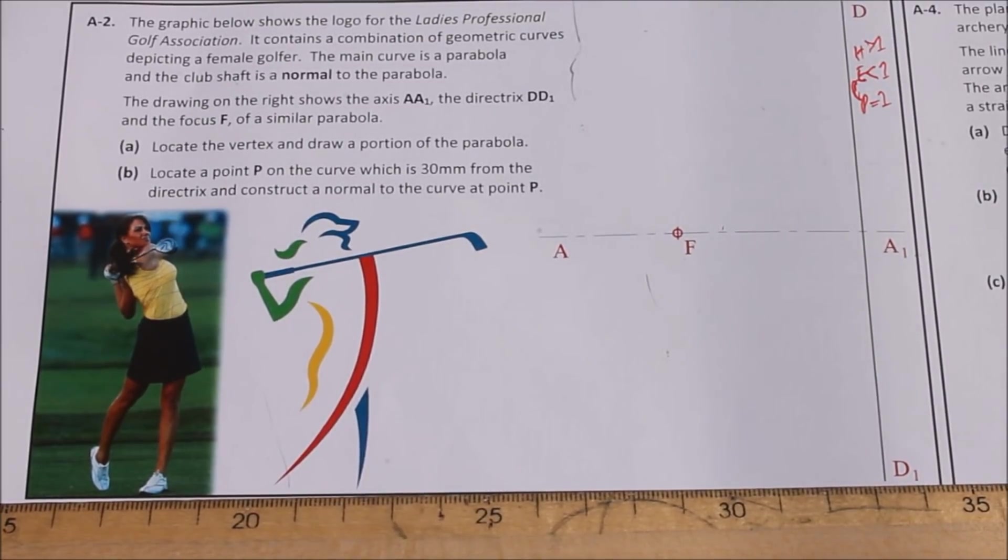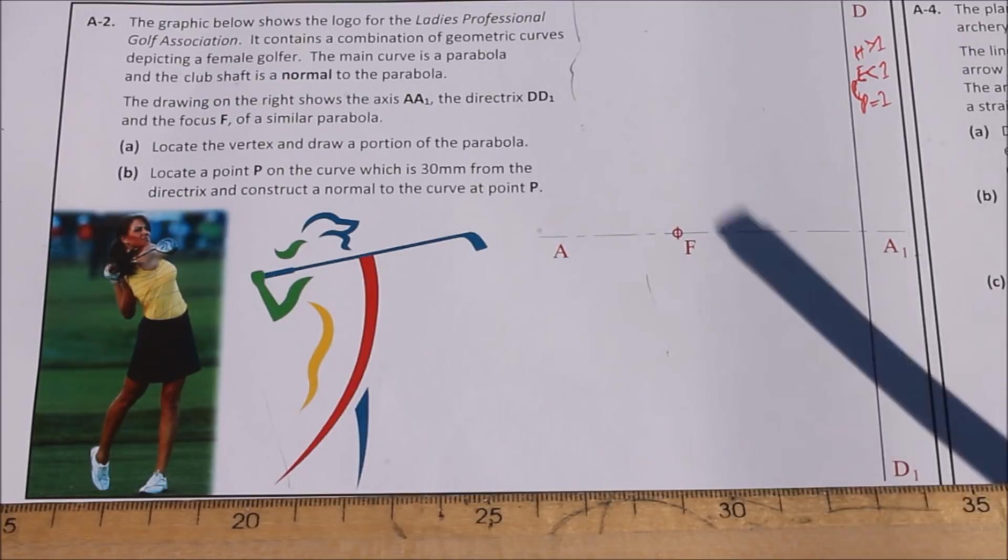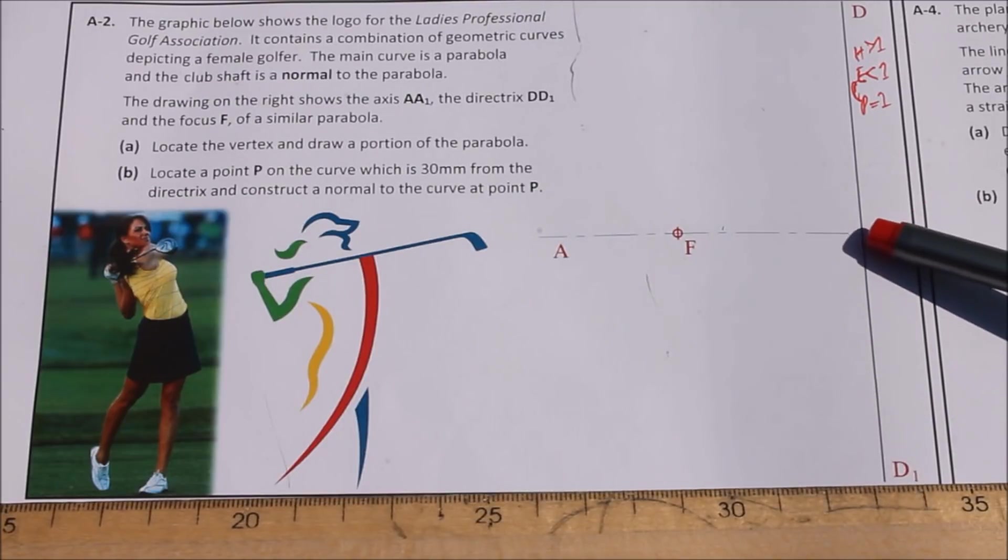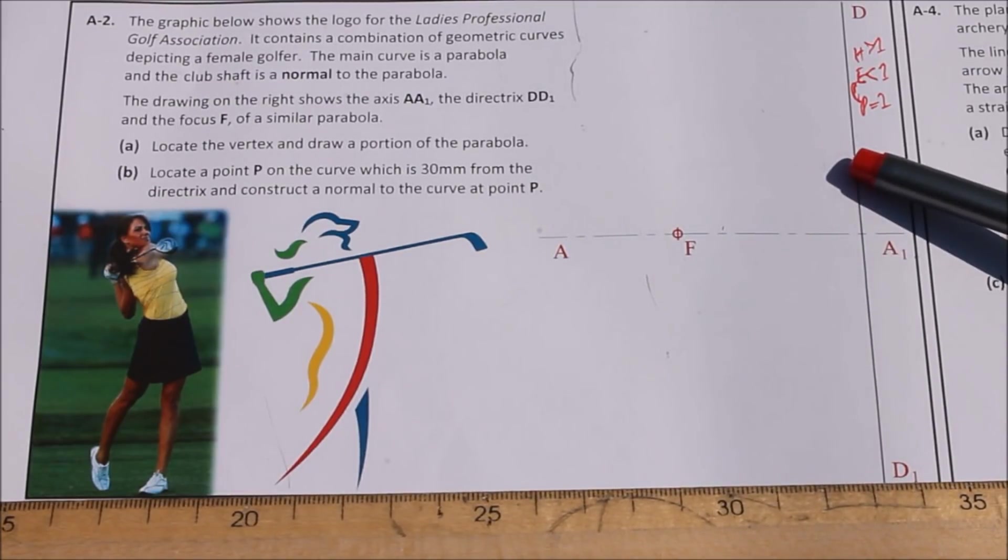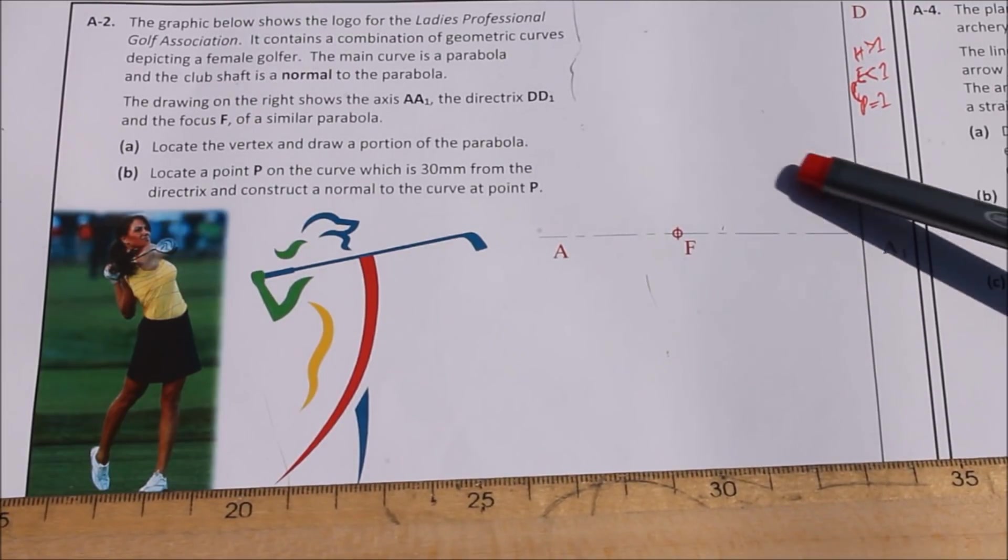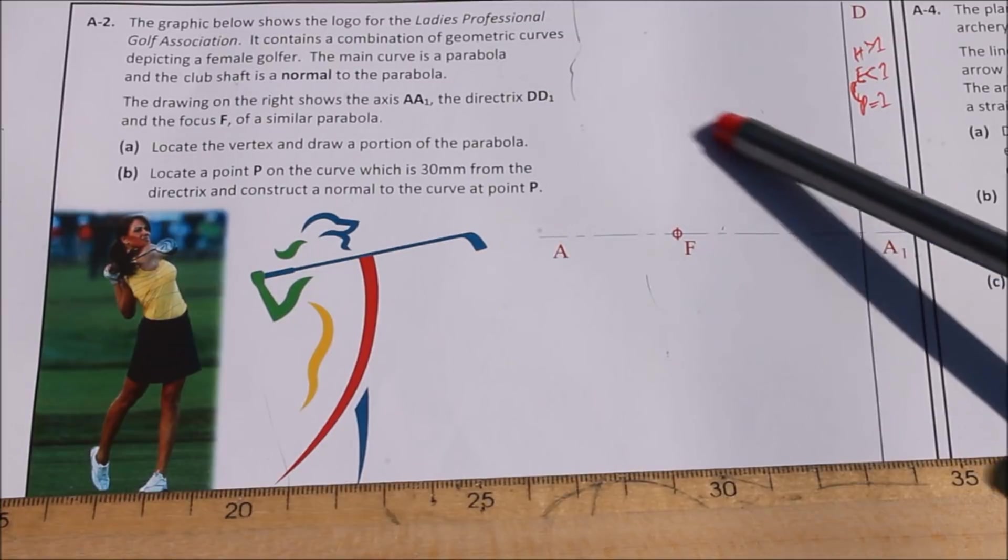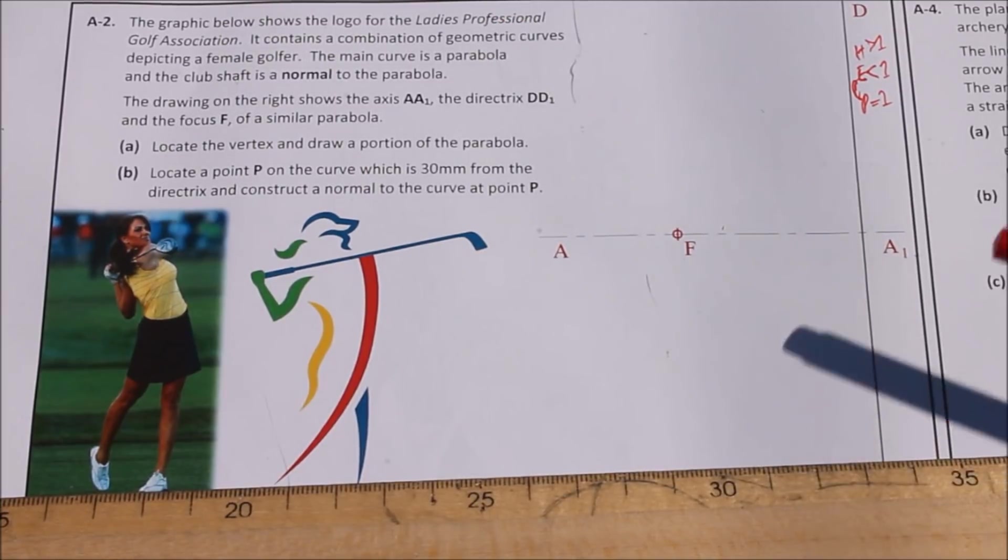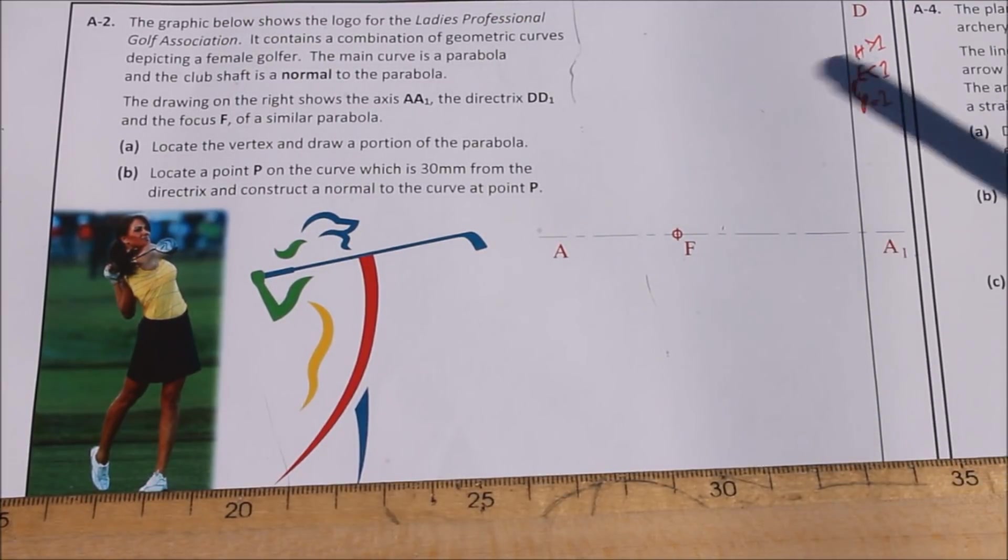So what that means is your line of eccentricity for this one, in this case, this parabola, if you went up one measurement on your directrix and in one measurement on your axis, and you were to draw them up and across, it'll give you basically 45 degrees. It'll give you the angle of your line of eccentricity.